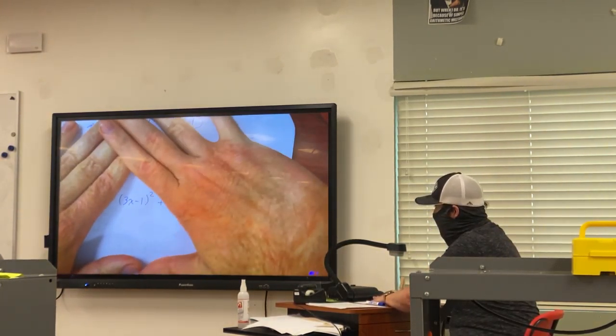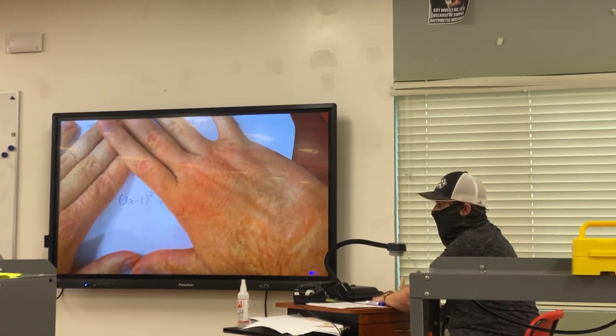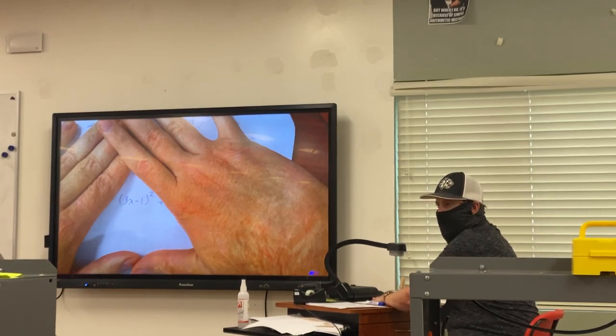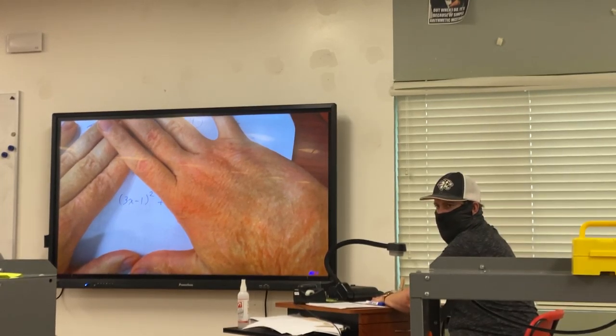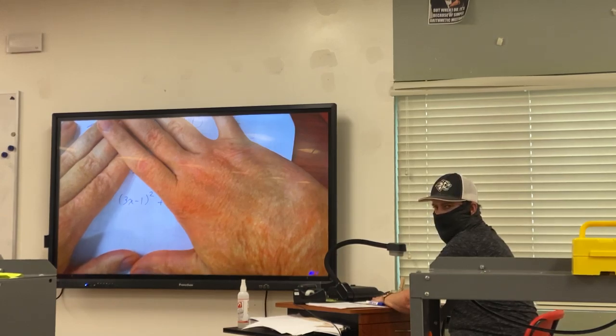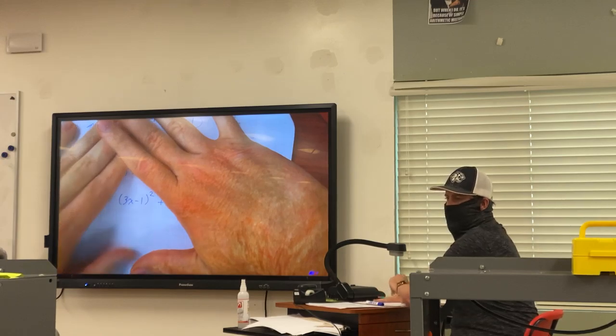But like especially even just this part, right? The inside is 3x minus 1, and the outside is squared. You cannot simply just take the derivative of 3x. It's 3 and squared. It doesn't work that way. You're going to have to do something more complicated. And that's because how would we normally do this? We would foil it out.